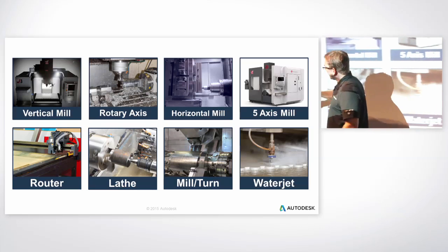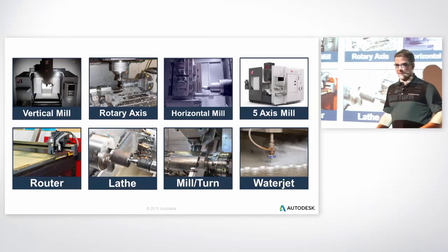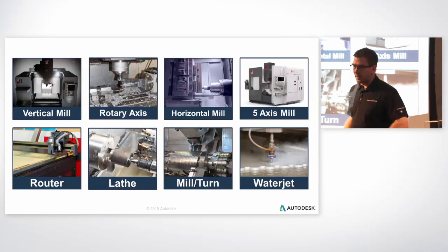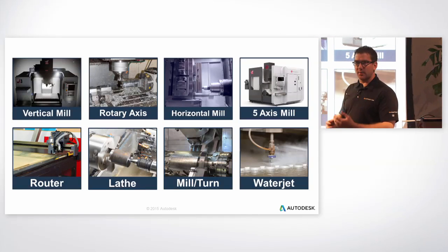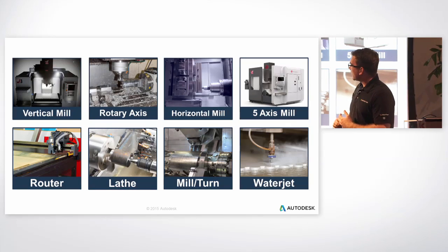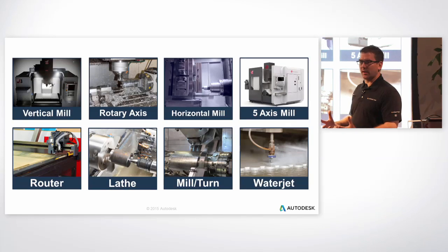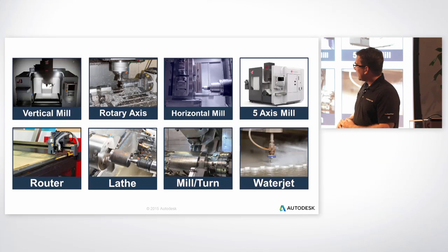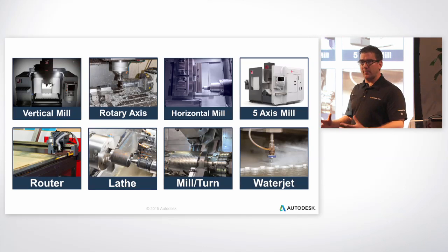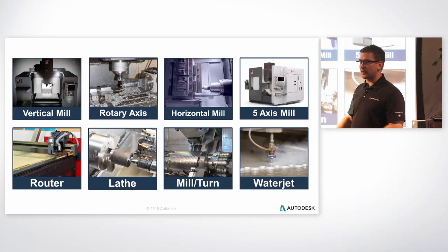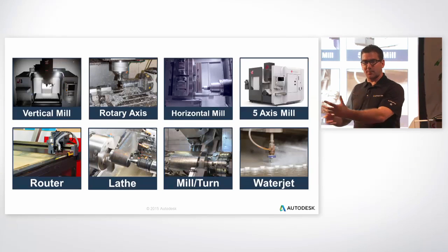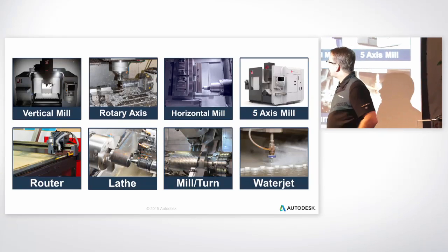The difference between a router and a mill is subtle — they both have three or multiple axes. The simplest way to describe it: a mill is very rigid for cutting heavy materials, while a router is usually a welded frame typically used for foam and wood. Other than that, the process of programming them is the same — you're still driving three axes. The application is usually different, like cabinets versus car parts, but more or less the same.